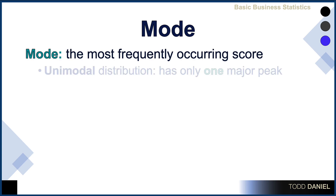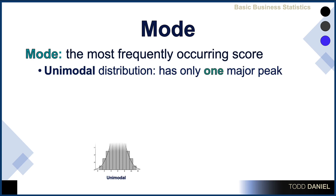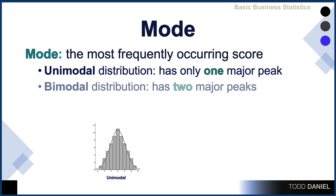Typically, we will have unimodal distributions. These are distributions that have only one major peak, such as with a normal distribution or a bell-shaped curve. However, there are times when we will discover bimodal distributions. Those are distributions that have two major peaks, and we can see them clearly delineated in our histogram.